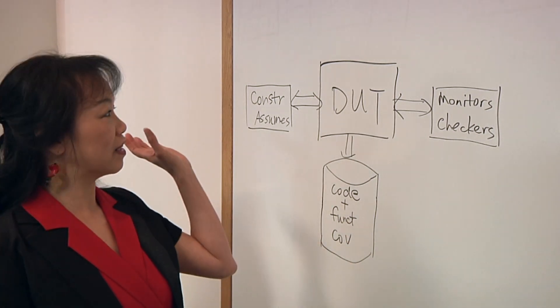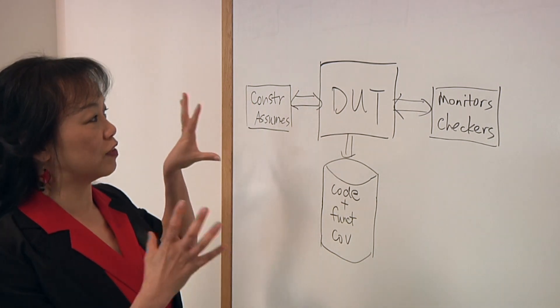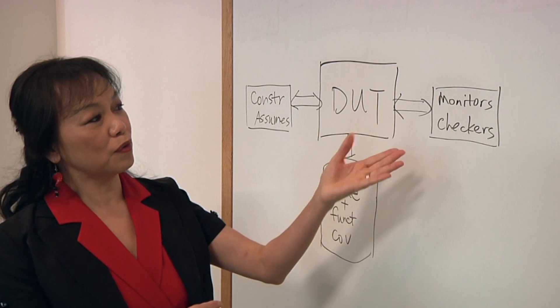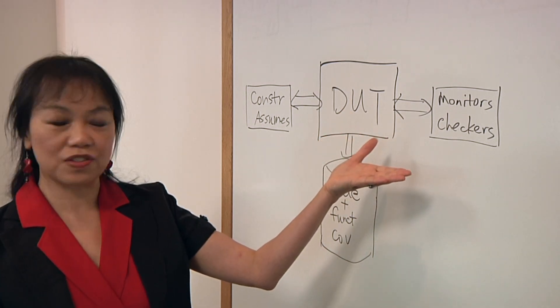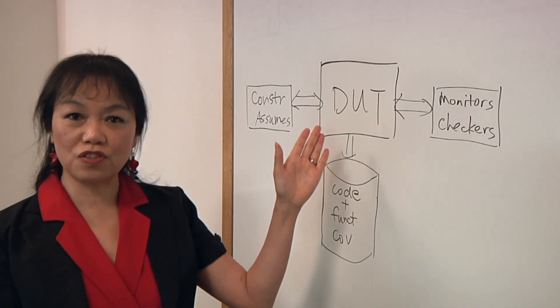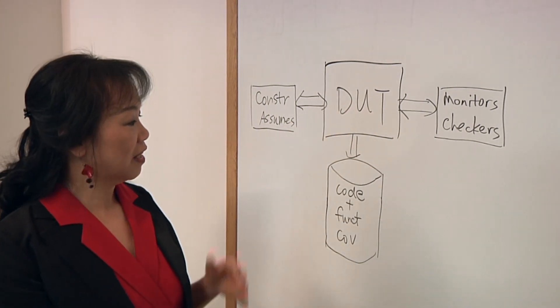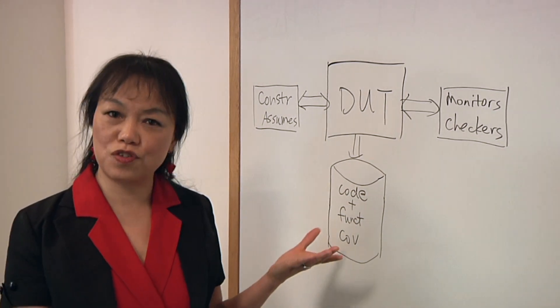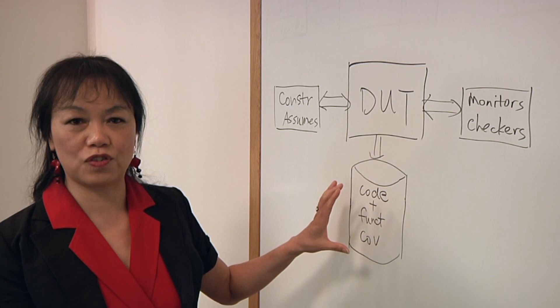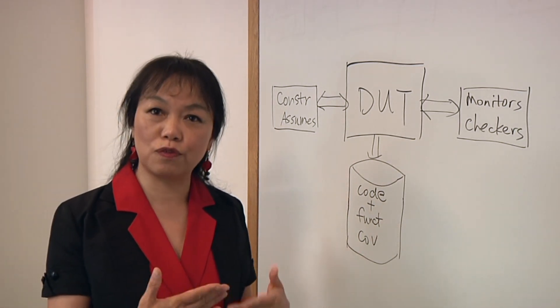They both require constraints on the input side to have valid stimulus going into the design. They both require monitors or checkers to monitor the output and internal logic to make sure it meets the design specification. And then we have well-defined coverage metrics in simulation - code coverage and functional coverage. So now we need to incorporate this into formal verification.